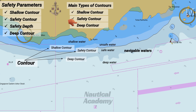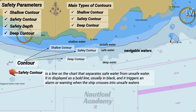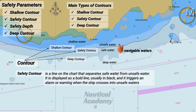The safety contour is a line on the chart that separates safe water from unsafe water. It is displayed as a bold line, usually in black, and it triggers an alarm or warning when the ship crosses into unsafe waters. However, even if the vessel crosses the safety contour and enters the light blue shaded zone, she may still be able to navigate safely without running aground, provided that the safety depth has been properly determined.